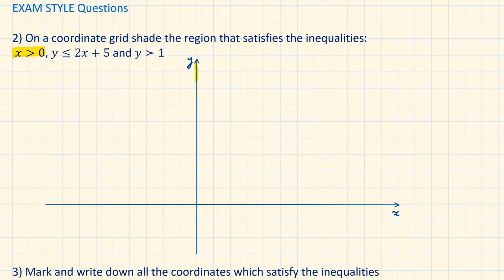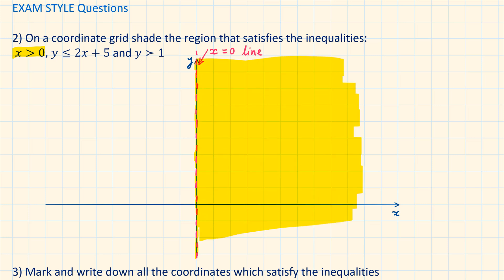The y-axis represents the x equals 0 line. We are drawing a dashed line because the 0 is not included. The area shaded in yellow represents x larger than 0.